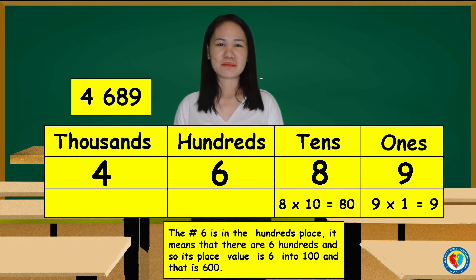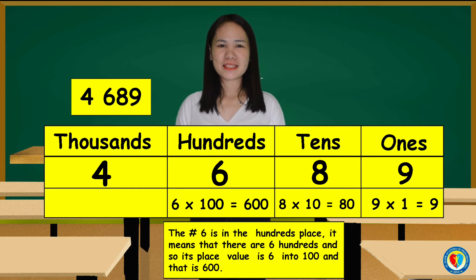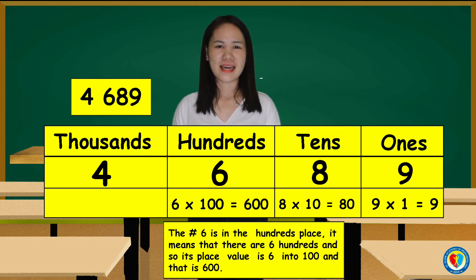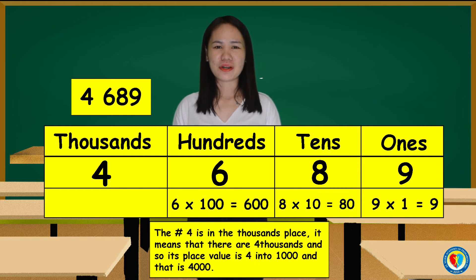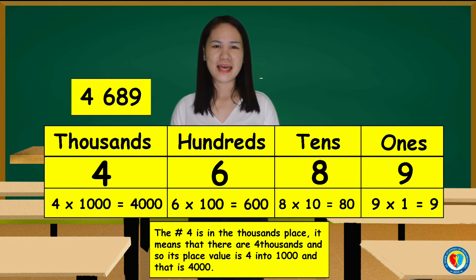The number 6 is in the hundreds place. It means that there are 6 hundreds. And so, the place value is 6 into hundreds, and that is 6 hundreds. The number 4 is in the thousands place. It means that there are 4 thousands. And so, its place value is 4 into thousands, and that is 4 thousands.